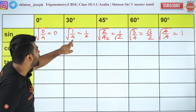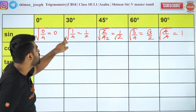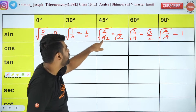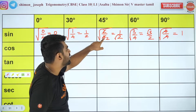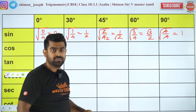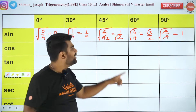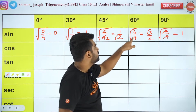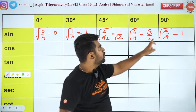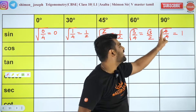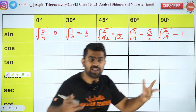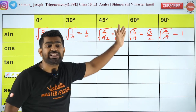Square root of 1/4: square root of 1 is 1, square root of 4 is 2, so it is 1/2. Square root of 2/4: 2/4 is 1/2, so square root of 1/2 is 1/√2. Root 3/4: √3 on top, root of 4 is 2, so √3/2. Root of 4/4: 4/4 is 1, and square root of 1 is 1.